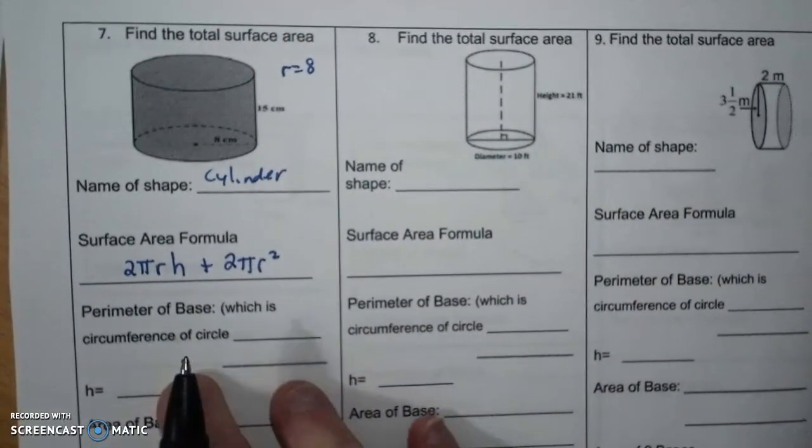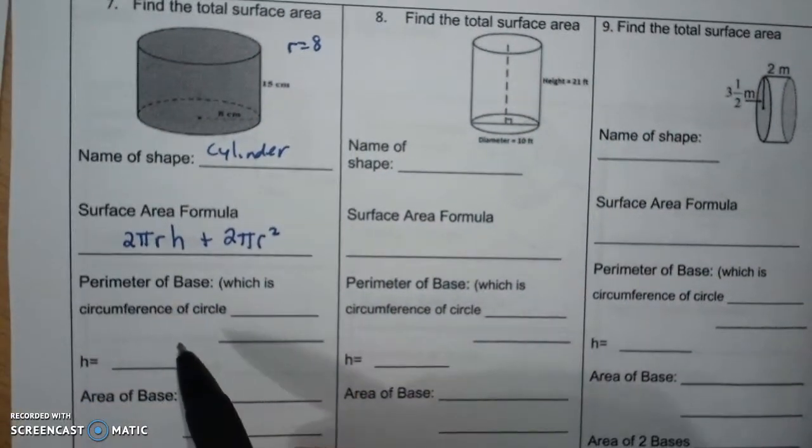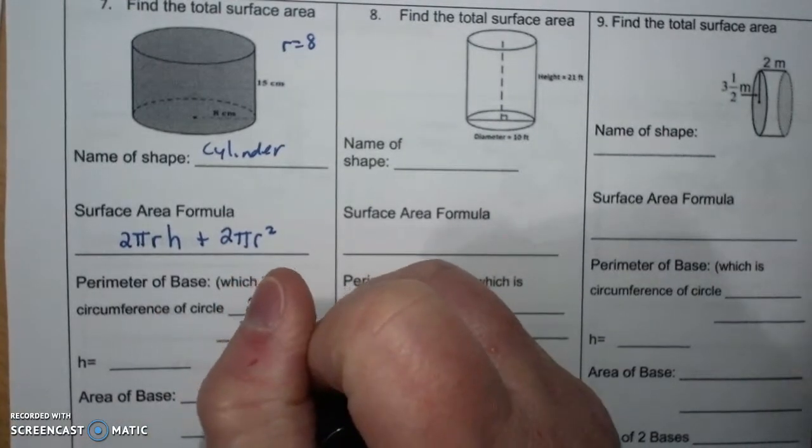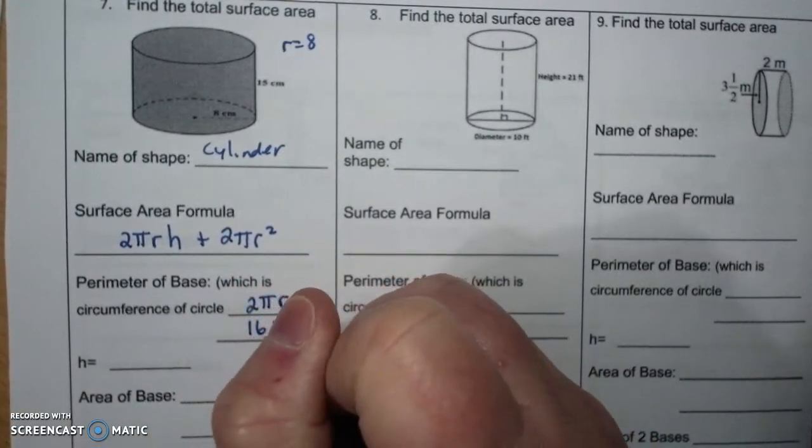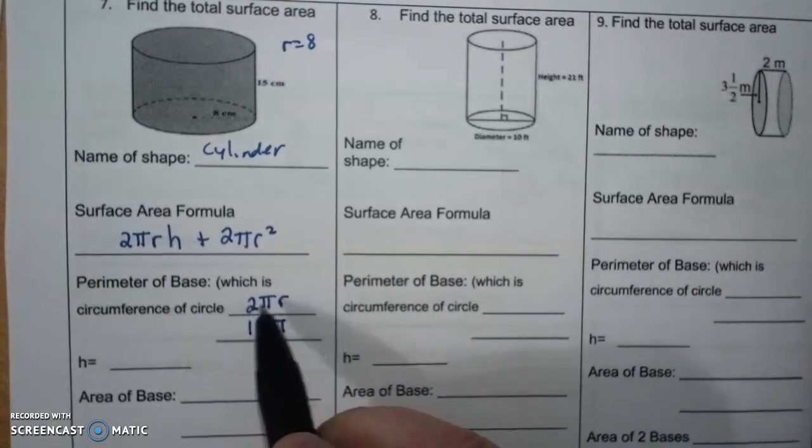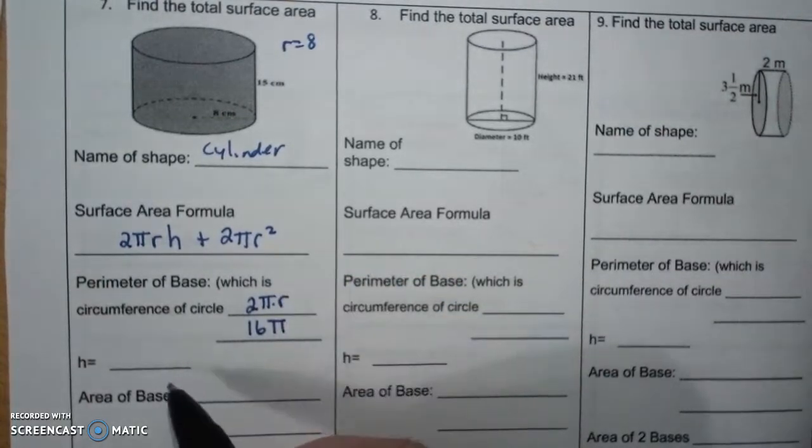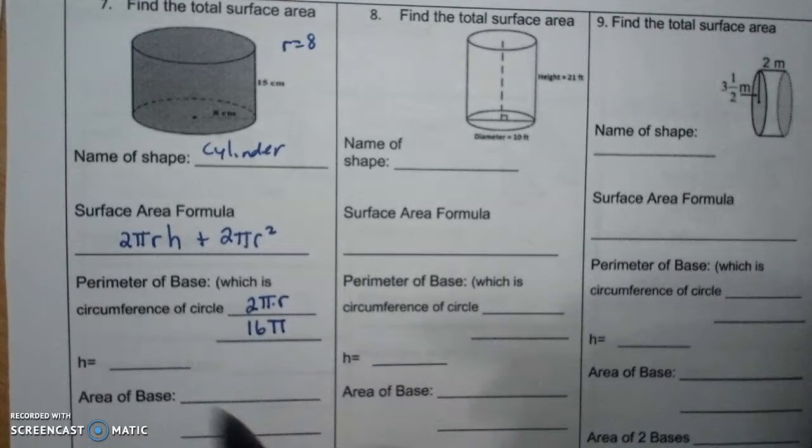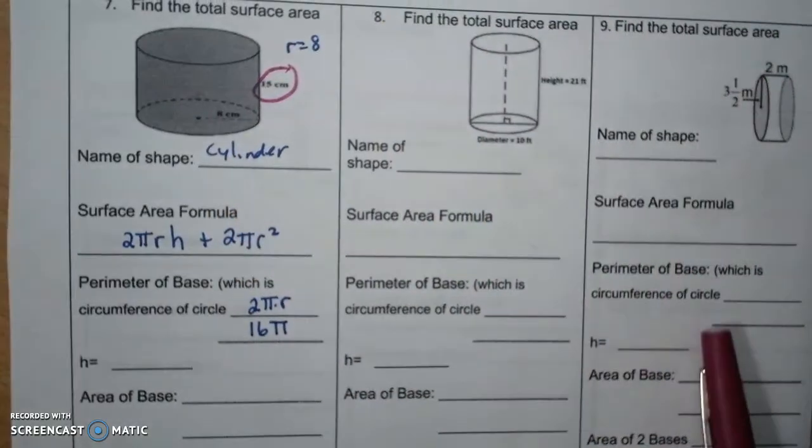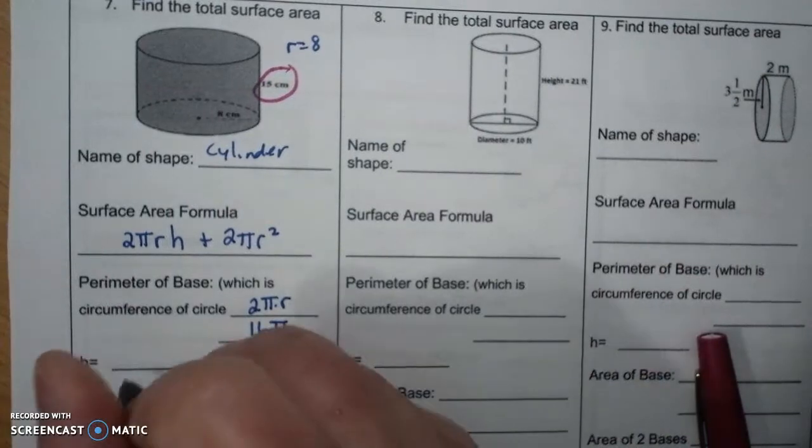So perimeter of base, which is circumference of the circle, circumference is 2πr which is 16π because it's 2 times π times 8. The height is the distance between the two bases and it's how far the circles are apart so it's 15.